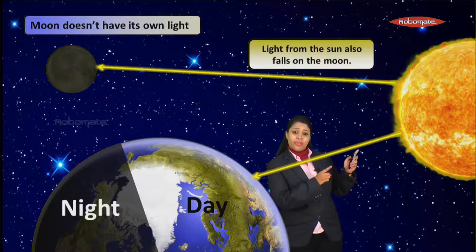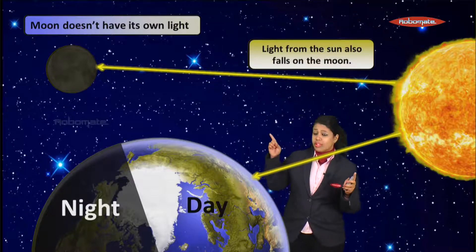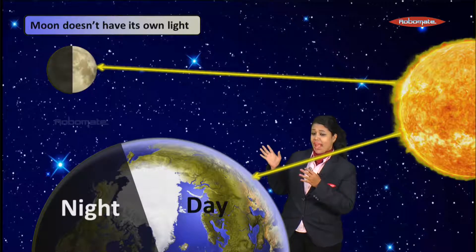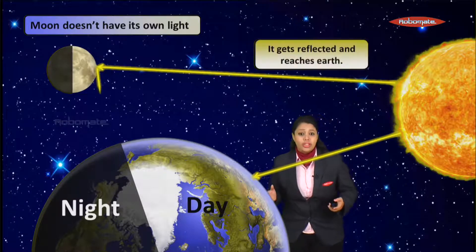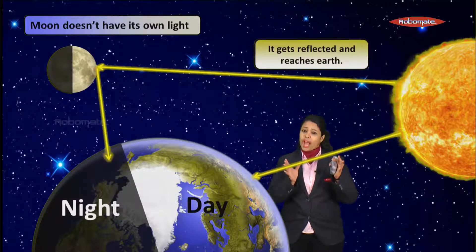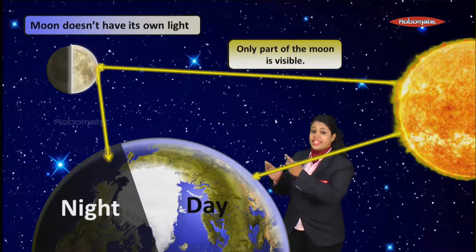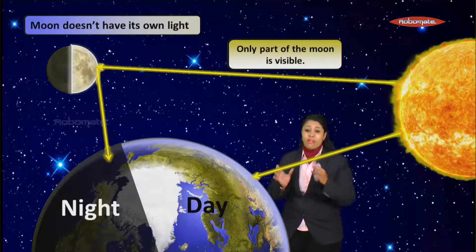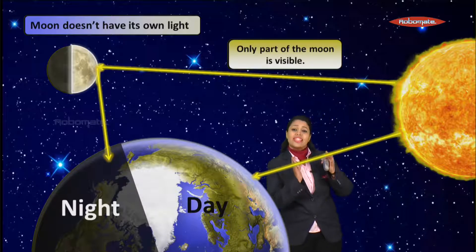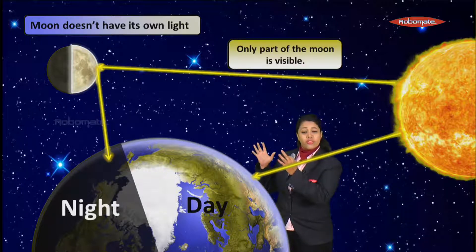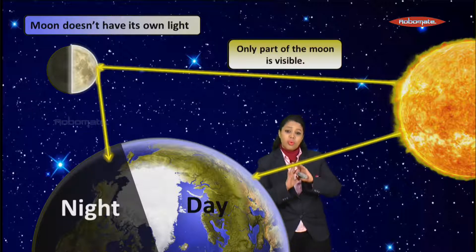Similarly, when light from the Sun hits the Moon, the side facing the Sun gets illuminated and is visible to us. This reflected light reaches the Earth, so we can see that side of the Moon. We can only see one side of the Moon — the back side is never visible because light only falls on the front side.